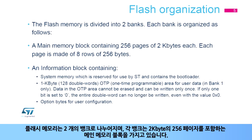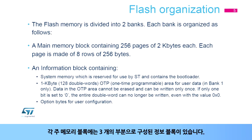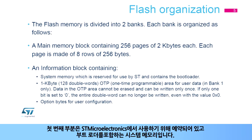The flash memory is divided into two banks, each having a main memory block containing 256 pages of 2 kilobytes each. Each page is made of 8 rows of 256 bytes. Each main memory block has an information block, which contains 3 parts. The first part is the system memory, which is reserved for use by STMicroelectronics, and contains the bootloader.